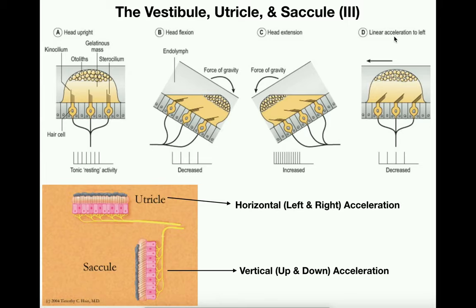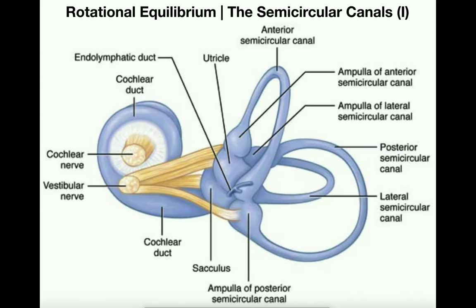The utricle and saccule are both involved in detection of those processes. Now we need to talk about rotational equilibrium, and changes in rotational equilibrium involve the function of the semicircular canals.